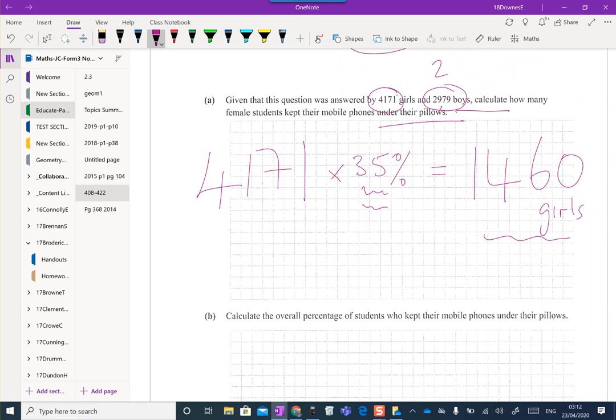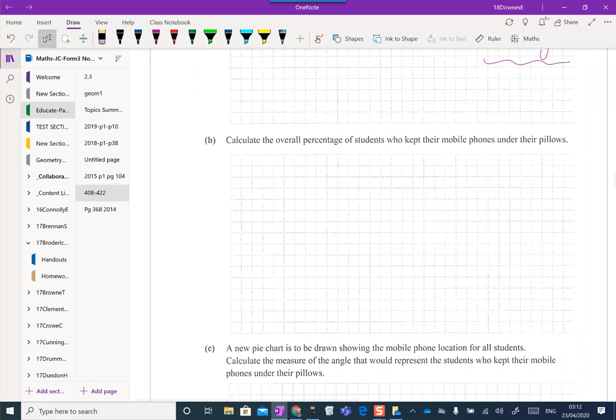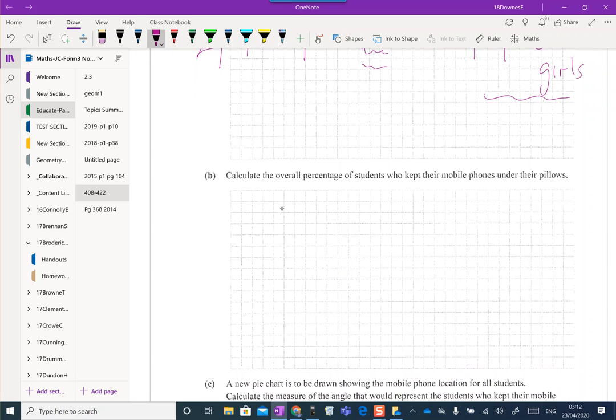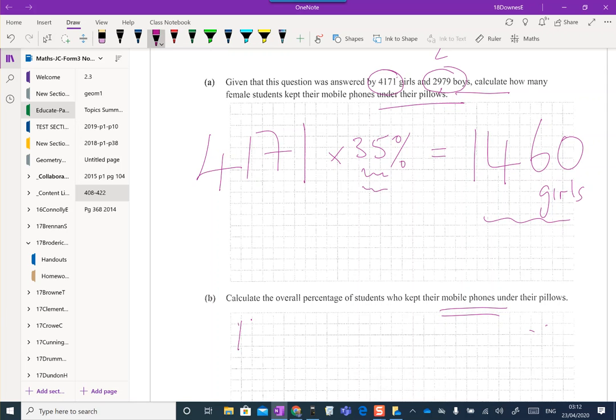Calculate the overall percentage of students who kept their mobile phones under their pillows. This could be quite a tricky question, because there's a thing called weighting here—W-E-I-G-H-T weighting—as in one side might be more important than the other. We know there's 4171 girls and 2979 boys. We really have to keep this in mind now while we go off and get the percentages.